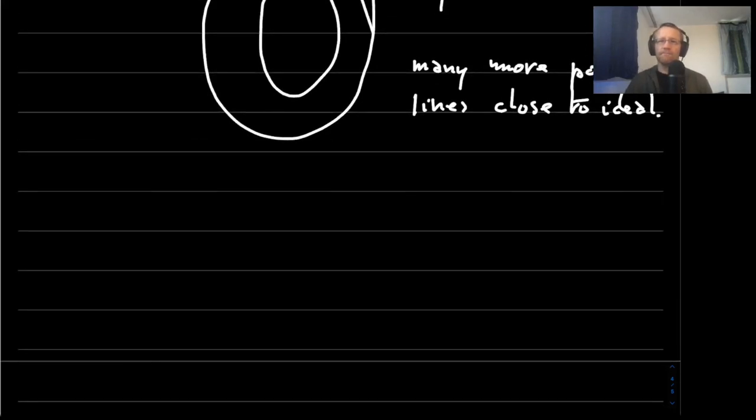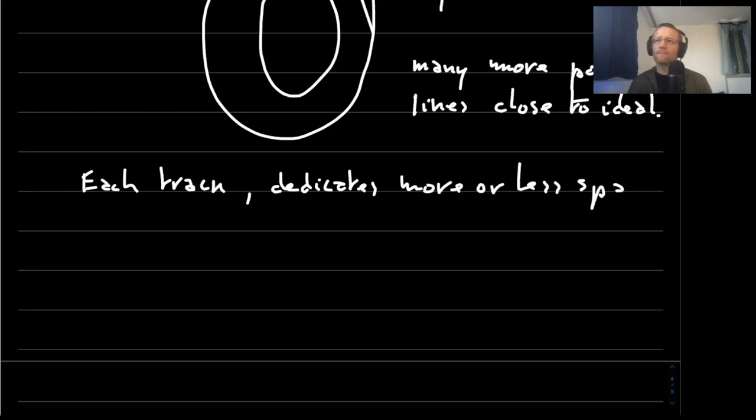And then for each track there will be a unique profile which dedicates more or less space to skaters going at a certain velocity. So this becomes very track individual.